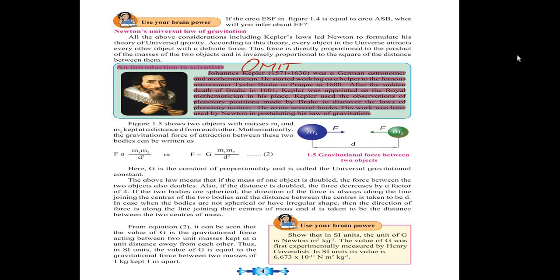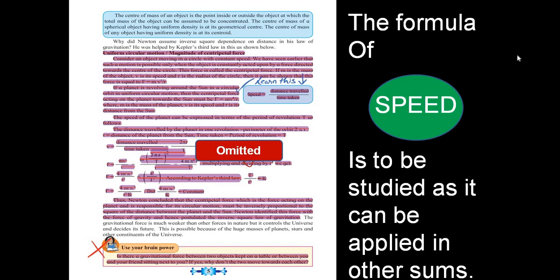Page five: you can see eventually the entire page is omitted, but you have to study the formula of speed given to you on the right-hand side. Speed is equal to distance traveled upon time taken. You have to learn that. Balance uniform circular motion and magnitude of centripetal force are completely omitted.